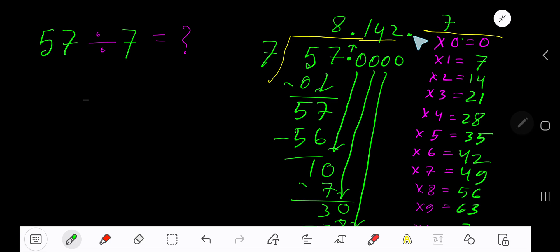Write 2 here. 2 times 7 is 14. Subtract, you are getting 6. You can bring down more 0s, but since we have got 3 places after decimal, just place here 3 dots. So our answer is 8.142 repeating.